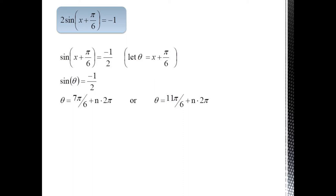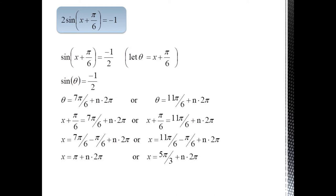which we can easily solve to get theta equals 7 pi over 6 plus n times 2 pi, or theta equals 11 pi over 6 plus n times 2 pi. And then, like before, we substitute x plus pi over 6 back in for theta. And to get x by itself, we subtract pi over 6 from both sides, leaving us with x equals pi plus n times 2 pi, or x equals 5 pi over 3 plus n times 2 pi.